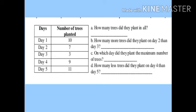The table shows: Day 1 — 10 trees planted, Day 2 — 7 trees, Day 3 — 3 trees, Day 4 — 9 trees, Day 5 — 11 trees. Now we will solve questions based on this data.